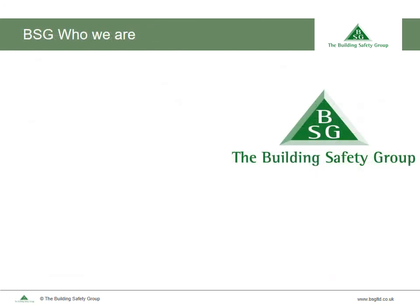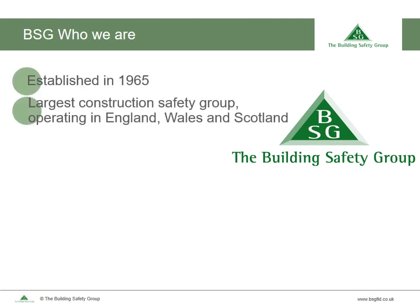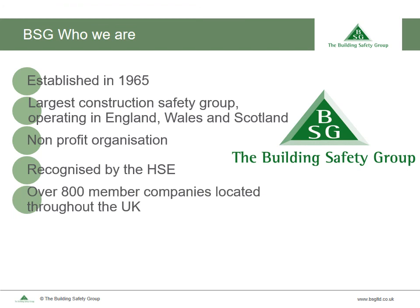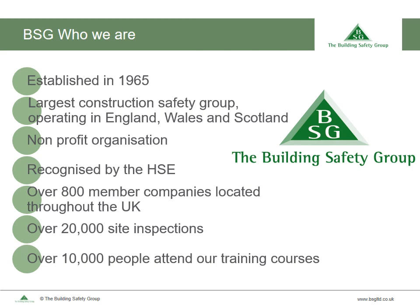I hope you found the podcast informative and helpful. The Building Safety Group was established in 1965 and is the largest construction safety group operating throughout mainland UK. We're a not-for-profit organisation owned by our members for the benefit of our members, and we're recognised by the HSE. We currently have 800 member companies, with a team of highly qualified safety advisors delivering over 20,000 site inspections every year, and over 10,000 people attend our training courses every year across the UK.